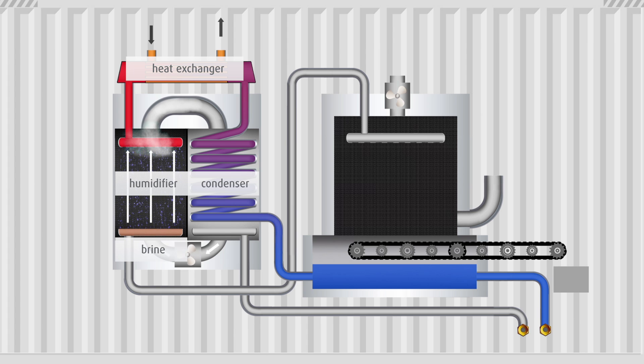This extremely humid air flows into the condenser where it cools down at the tubes with the colder raw water and releases its water by way of condensation. At the same time, the condensation heat is used for preheating the raw water in the tubes.